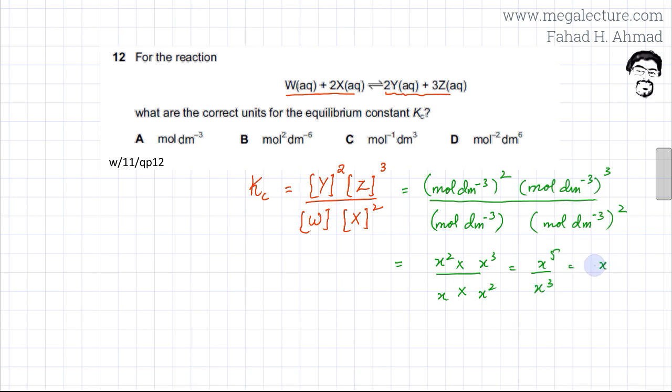If you cancel this, it becomes x². So you substitute mol per dm³ back again. Since x was mol per dm³, your final simplified unit is mol per dm³ squared. We can further simplify that to mol² dm⁻⁶.